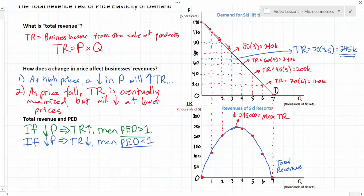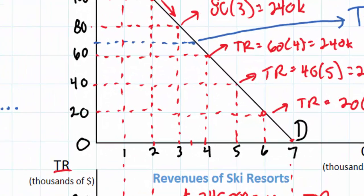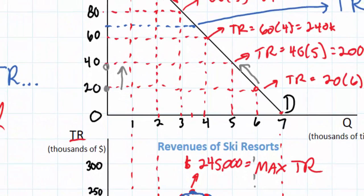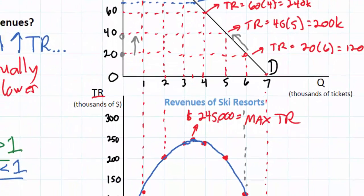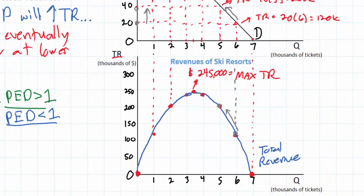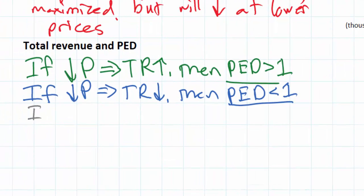What if we were moving in the other direction along our demand curve? What if ski resorts wanted to raise their price from, say, $20 to $40? A price increase from $20 to $40 would move us along our demand curve from a quantity demanded of 6,000 down to a quantity demanded of 5,000. But along our total revenue curve, it would lead to an increase in total revenue from $120,000 to $200,000. So an increase in price caused total revenue to increase. What's going on there? Is demand elastic or inelastic?